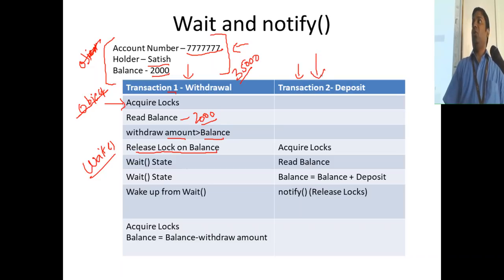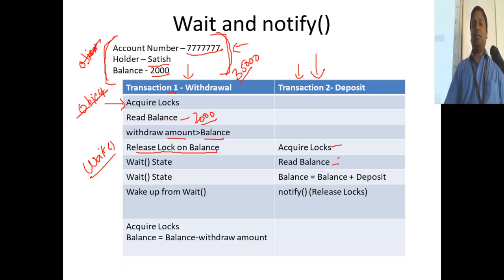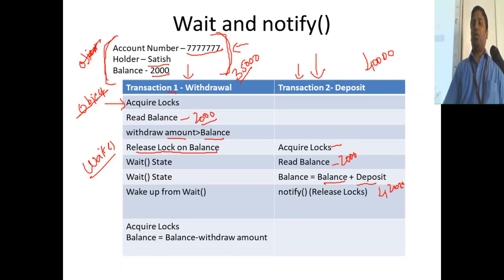When thread one releases the lock, thread two — which was waiting — acquires the lock. It reads the balance: 2,000. Say it's doing a deposit of 40,000, so the balance becomes 42,000. Then thread two calls notify().